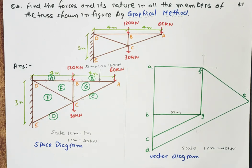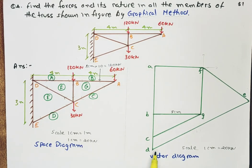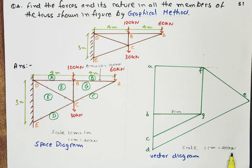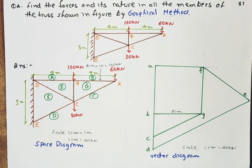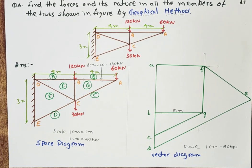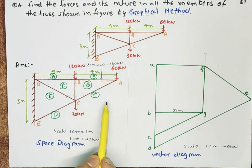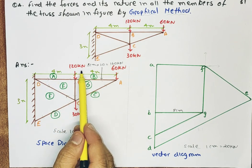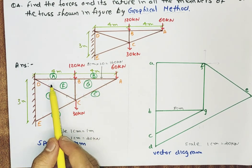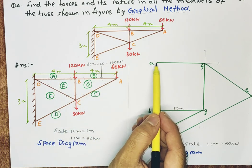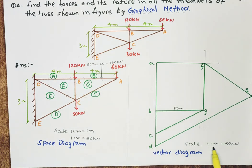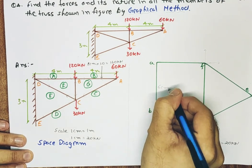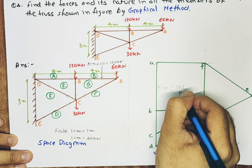This is where we can get a clear idea. Beside this space diagram, I have drawn a vector diagram, where I have taken a scale of 1 centimeter equal to 20 kilonewton. Going from A to B, the only vertical force is 120 kilonewton external force going downwards. So I am marking point A and going downwards. 120 divided by 20 gives 6 centimeter, so A to B will be 6 centimeter in the vector diagram.